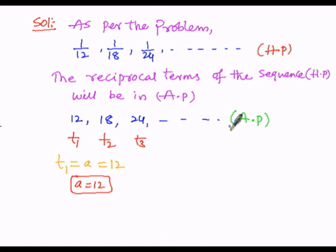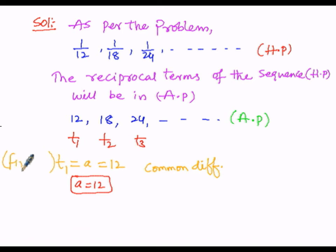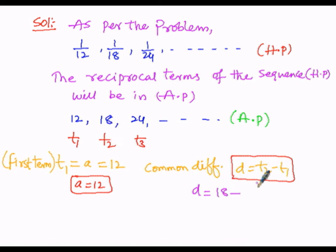Since the sequence is in AP, the difference between consecutive terms will be common. The common difference d equals t2 minus t1. So d equals 18 minus 12, which gives 6. Since 18 is greater than 12, the result is positive. Therefore the common difference d equals 6.